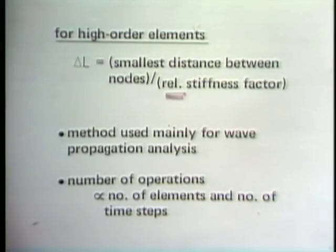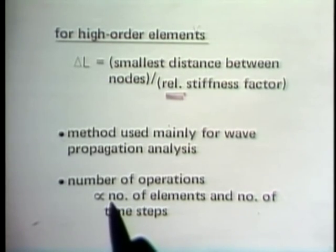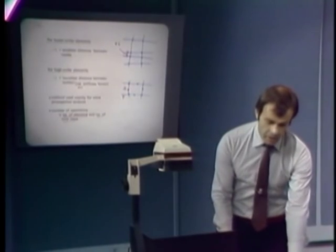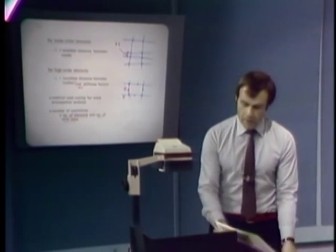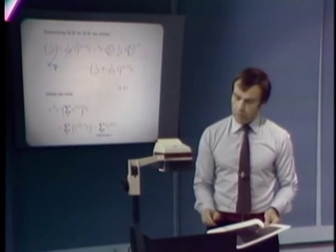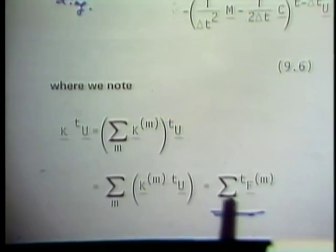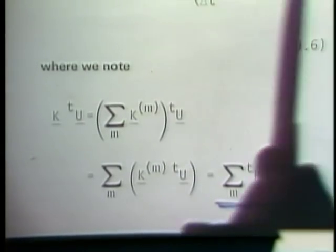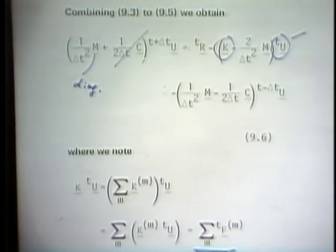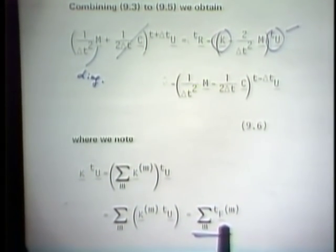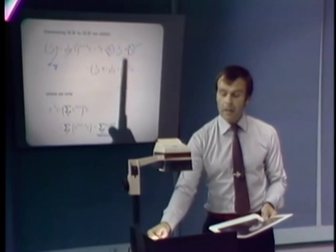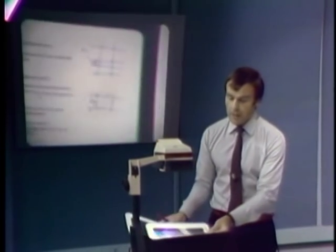The number of operations for the central difference method is proportional to the number of elements times the number of time steps. The bandwidth of the system does not appear in the operation count because we never assemble a global K matrix — only the number of elements matters.